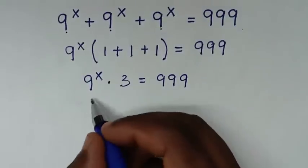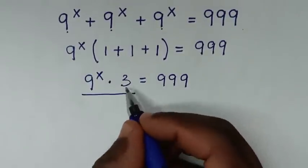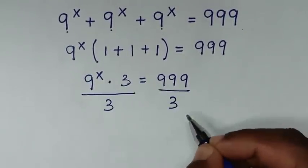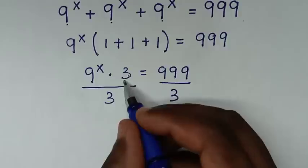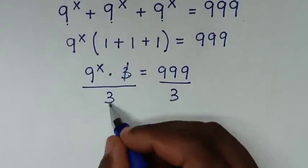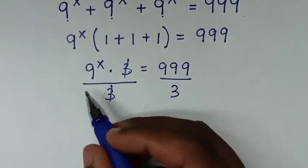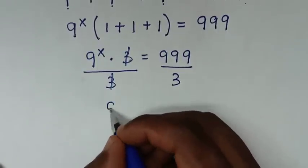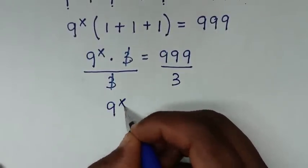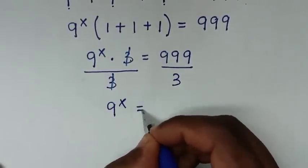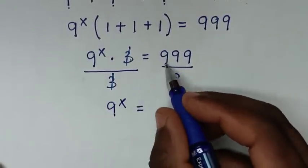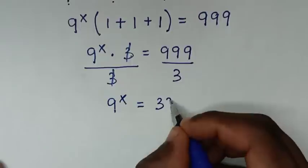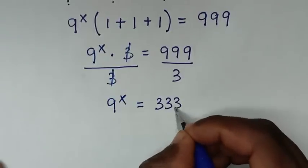Then we'll divide by 3 on both sides, so the 3 cancels, and it will be 9 power x is equal to 999 divided by 3, which is 333.